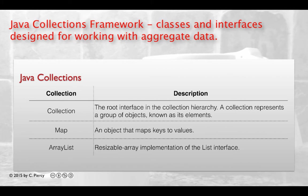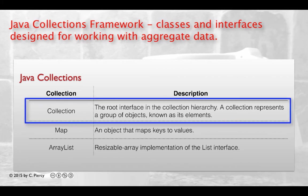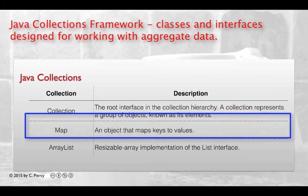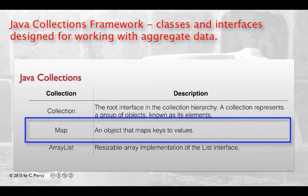Some of the most common Java collection components include the collection, which is the root interface in the collection hierarchy. A collection object represents a group of objects. These are known as its elements. You cannot directly implement the collection interface, however. The collection hierarchy provides implementations of more specific sub-interfaces like set and list.